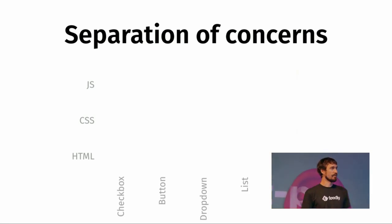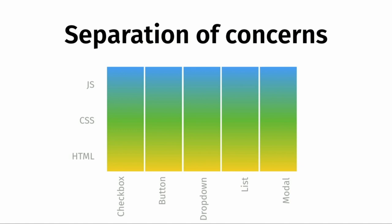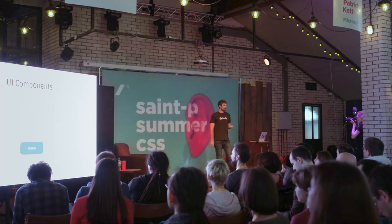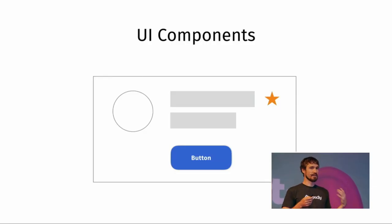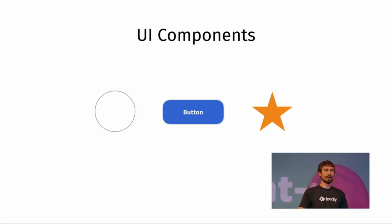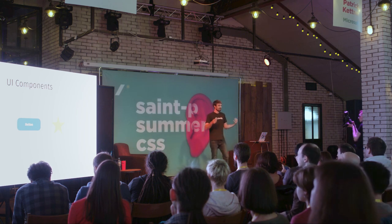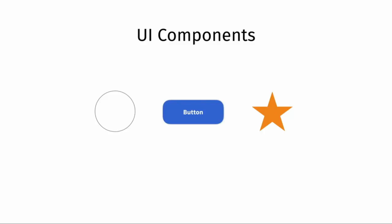As humans, we actually would like to separate concerns a little bit differently, because this is how we think about our user interface — we think about the modules we see on screen, not about the technologies we use to program those modules. I call them UI components. This is a slightly different abstraction that describes the user interface we're building. These UI components, as the first talk showed us, can be tiny components from which we compose the whole system — it's called a design system.